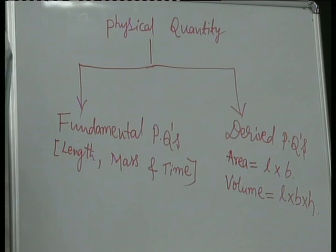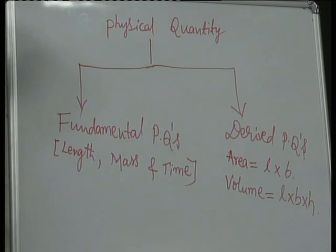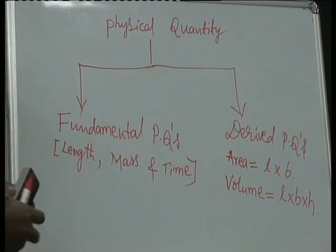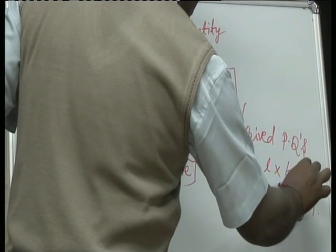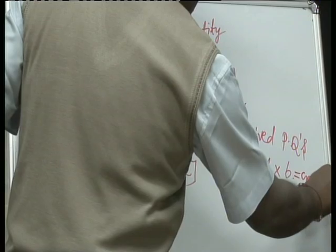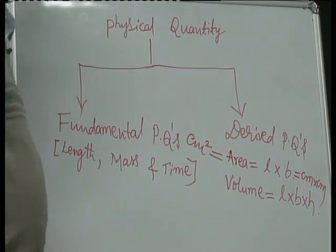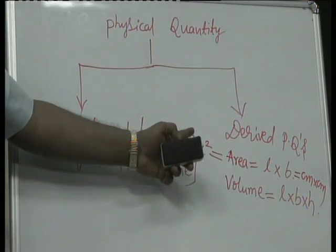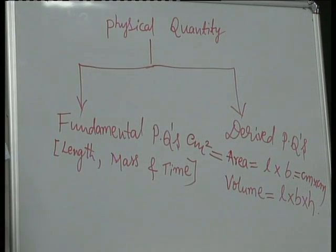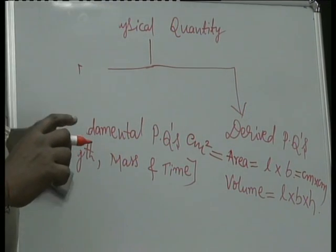Similarly, what are derived units? The units which are used to measure derived physical quantities are called derived units. For example, area: if length is in centimeter and breadth is in centimeter, then the unit of area is centimeter square. Centimeter square is the unit of area, where area is a derived physical quantity — so the units used to measure derived physical quantities are called derived units.